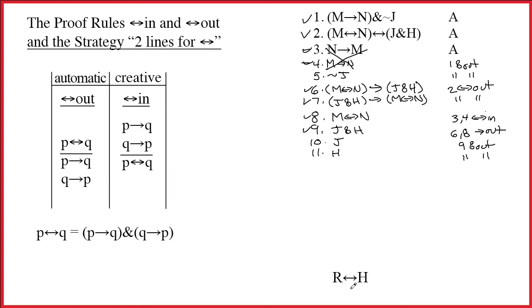And we identify the main connective. Since the main connective at the bottom is a double arrow, that tells us we should use this strategy I call two lines for double arrow.